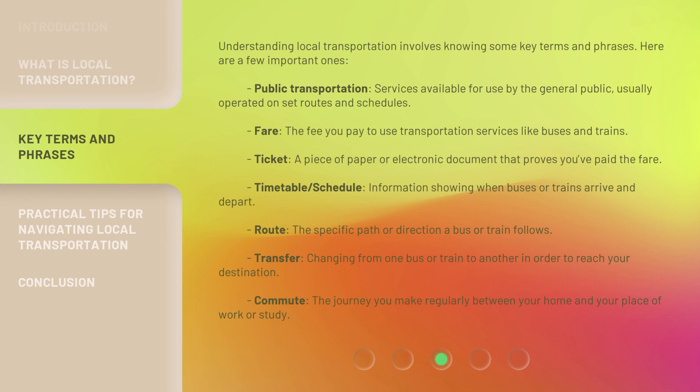Understanding local transportation involves knowing some key terms and phrases. Here are a few important ones. Public transportation: services available for use by the general public, usually operated on set routes and schedules. Fare: the fee you pay to use transportation services like buses and trains. Ticket: a piece of paper or electronic document that proves you've paid the fare.